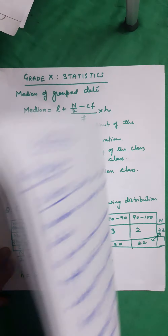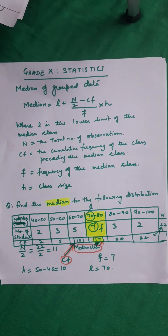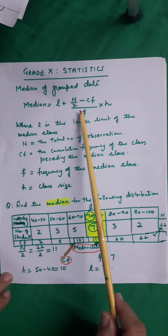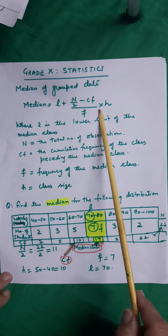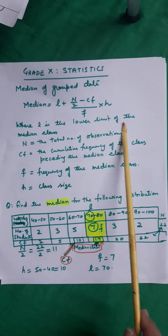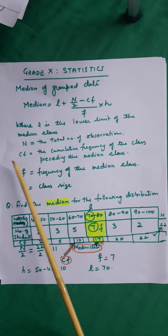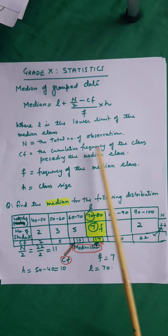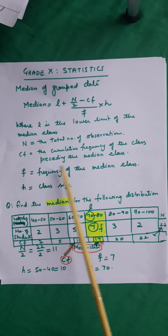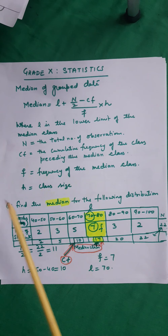Now we will learn about median of grouped data. Median is given by the formula: L plus (N/2 minus CF) upon F into H, where L is the lower limit of the median class, N is the total number of observations, CF is the cumulative frequency of the class preceding the median class, F is the frequency of the median class, and H is the class size.